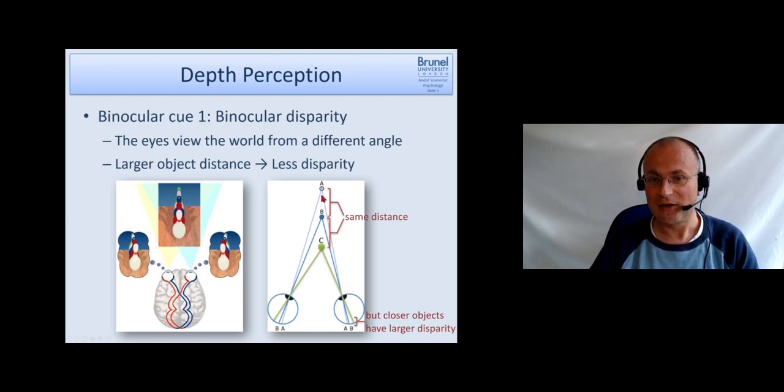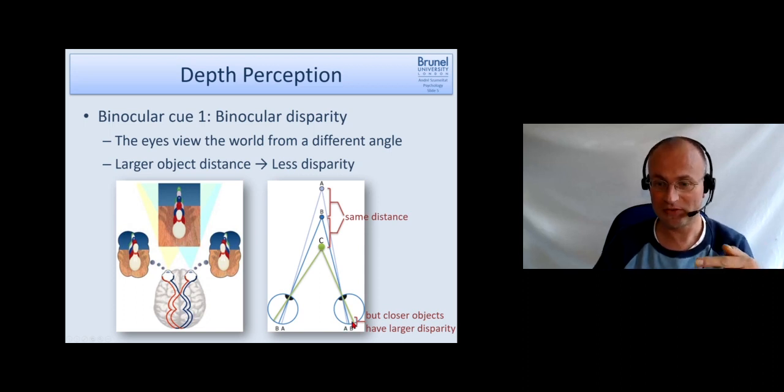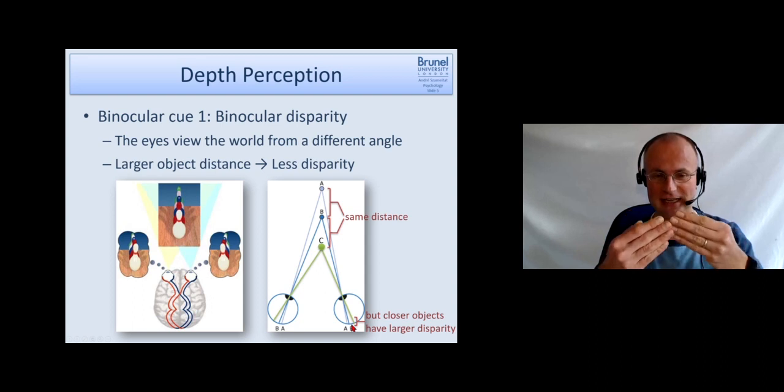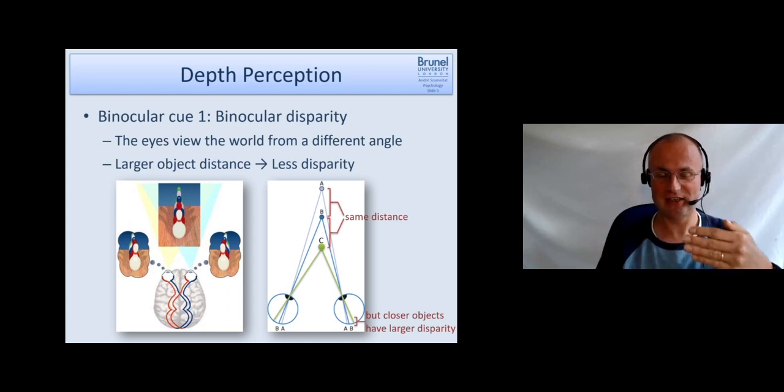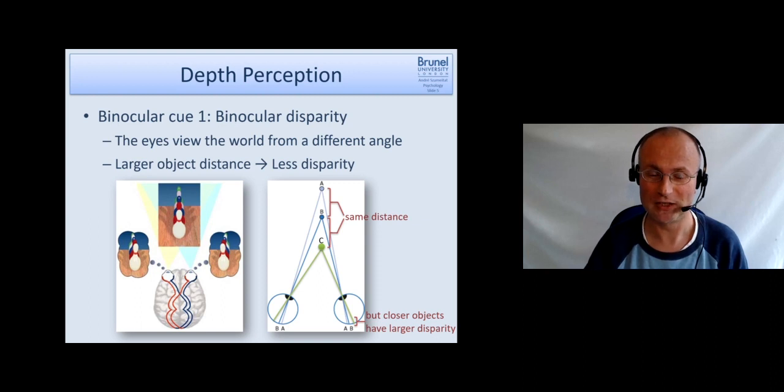The point is, when in space B and C have the same distance as A and B from each other, this disparity on our retina becomes larger the closer the objects are. So disparity helps us a lot to determine the depth, the distance from us of these objects. But the further it goes away, the smaller the disparity gets. Roughly around 2-3 meters, disparity is so small that it's not useful anymore for us to infer depth.